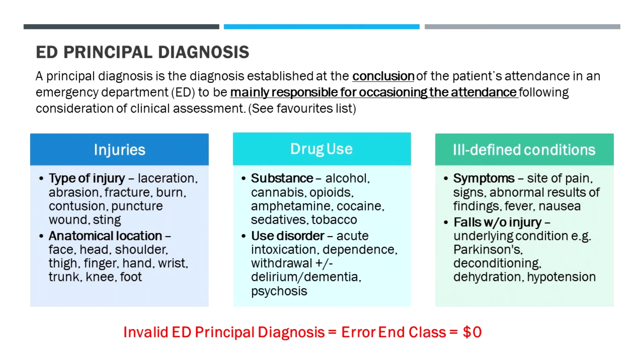On this slide, we've got examples where we're drilling down on the more specific we can be. Rather than just saying an injury, being able to be specific with the type of injury — a laceration, an abrasion, a fracture (obviously more complex and requiring more intervention), a burn, contusion, puncture wound. These terms are quite foreign to a physician trainee, but much more bread and butter for emergency and surgical specialties.